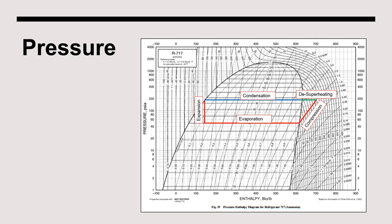Desuperheating is the process of absorbing heat from the ammonia vapor until it reaches the point of saturation. Once the vapor reaches its saturation point, it can then condense into a liquid.